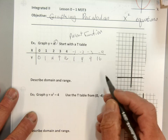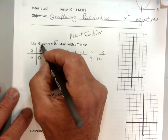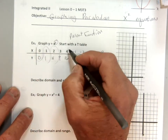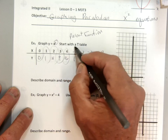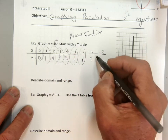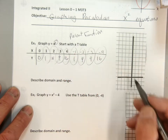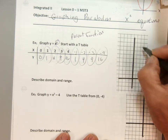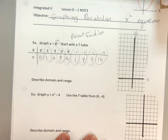So these are x, y points. I've got points (0,0), (1,1), (2,4), (3,9), (4,16), (-1,1), (-2,4), (-3,9), and (-4,16). So I'm going to graph those on my x, y axis.